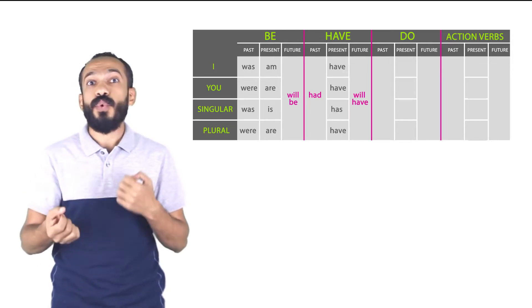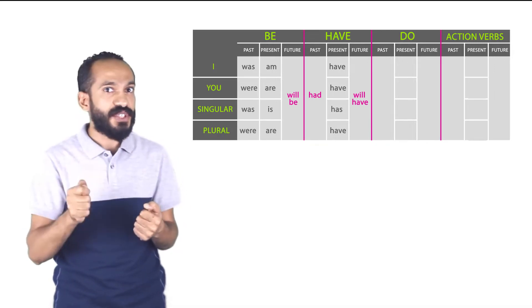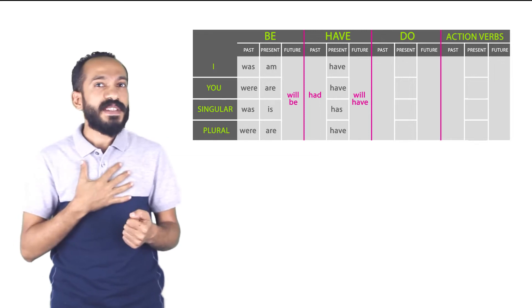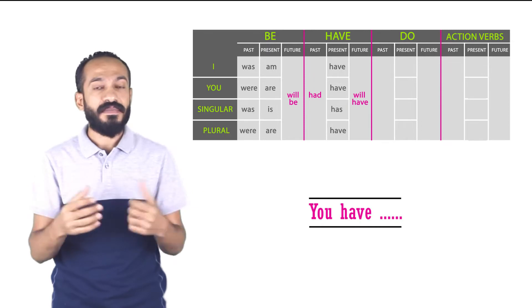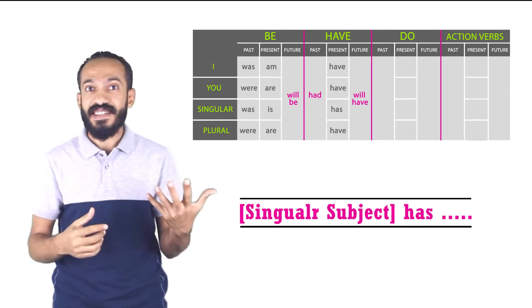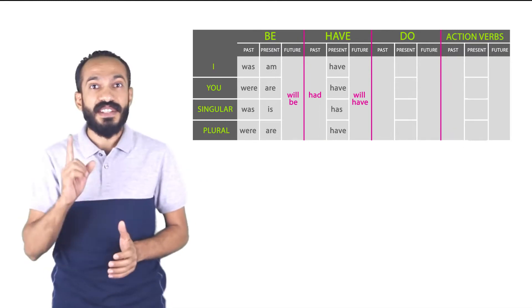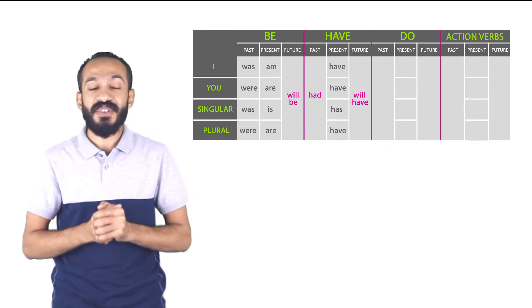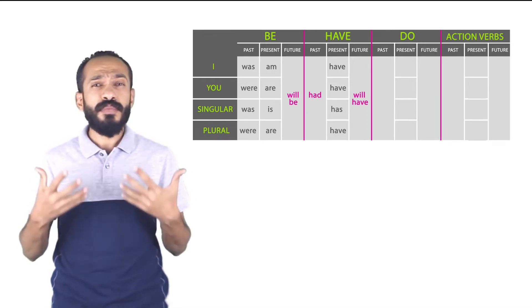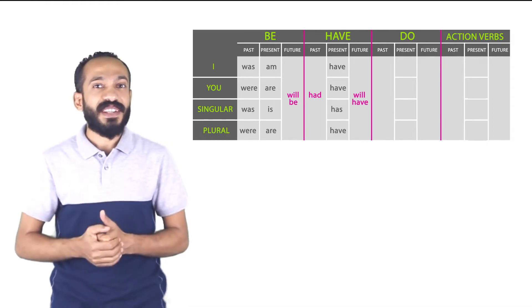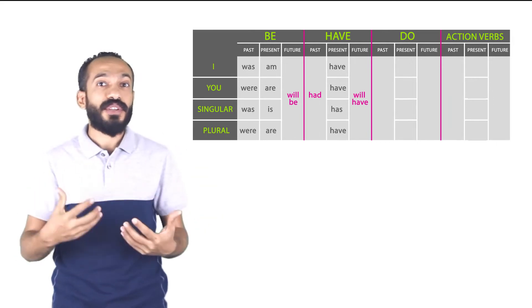The only part we need to pay attention to is verb to have in the present tense — we use 'have' or 'has.' Every time I talk about myself, I say 'I have.' You: 'you have.' Singular subject: 'has.' Plural subject: 'have.' That means I use 'have' with everything except singular subjects — for those I use 'has.' We're going to practice how to select the correct form of the verb according to the subject.